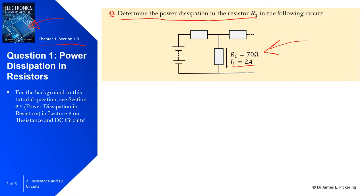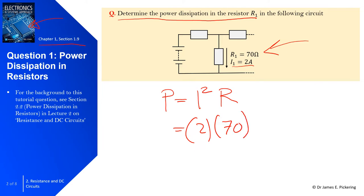You might want to pause the video and have a go at the question. Recalling equation eight from the lecture, power P equals I squared times R. In this case, the current is 2 amps and the resistor value is 70 ohms. So 2 squared is 4, times 70 gives us 280. The units of power are watts, so the answer is 280 watts of power dissipated in resistor R1.